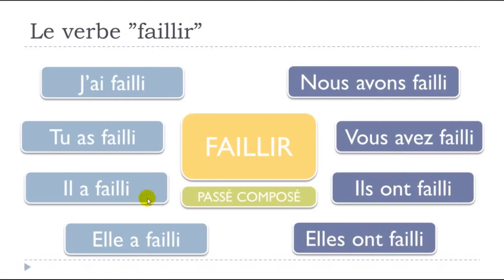These passé composé forms are actually the most used. One more time: j'ai failli — you use avoir, like most verbs, and the participe passé is failli. Tu as failli, il a failli, elle a failli, nous avons failli — remember the liaison here — vous avez failli, ils ont failli, elles ont failli.